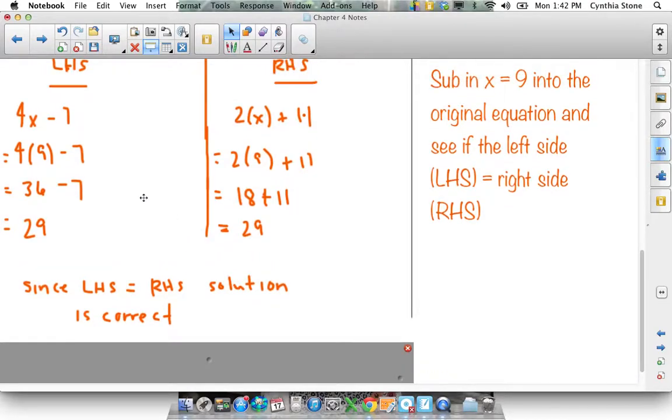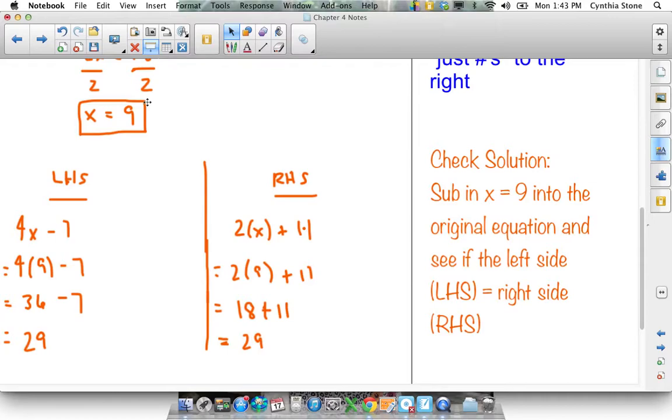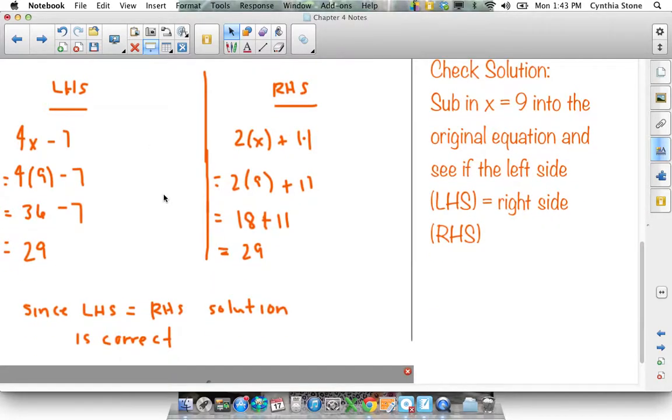Since left-hand side equals right-hand side, my solution is correct. So if I had made an error somewhere, and say I got x equals 3 when I solved the equation, I plugged in the numbers, I would end up with 4 times 3 minus 7, which would be 5 over here. And 2 times 3 plus 11 is 17. I would have ended up with these two sides not equal to each other. And that would tell me that I made a mistake along the way, and I need to revisit my solving part. So that's why we check the solution and make sure our answer is correct. For sure, this is something you'll have to practice on your assignment and on your test.